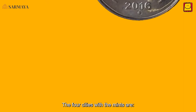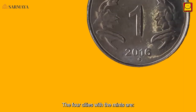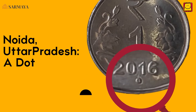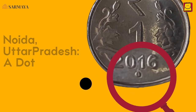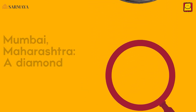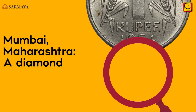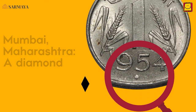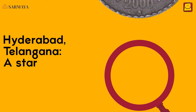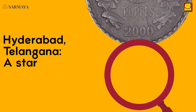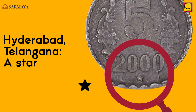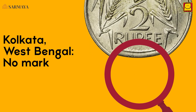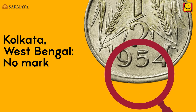The four cities with mints are: Noida, Uttar Pradesh — a dot below the year; Mumbai, Maharashtra — a diamond below the year; Hyderabad, Telangana — a star below the year; and Kolkata, West Bengal — no mint mark.